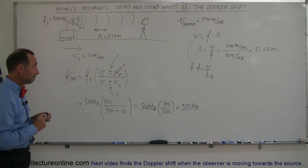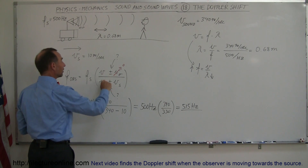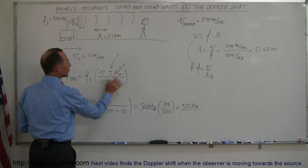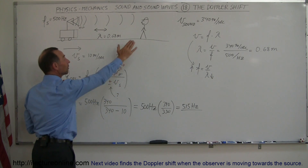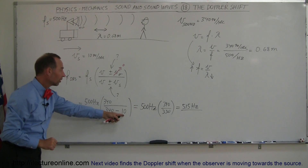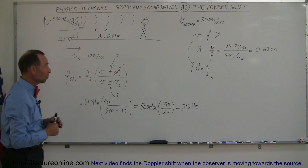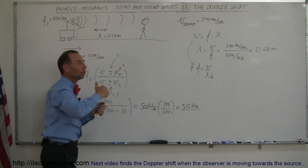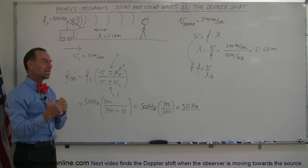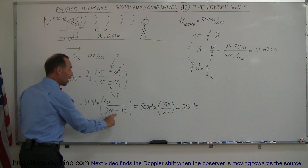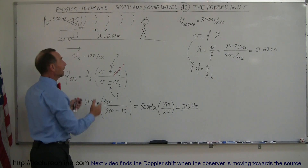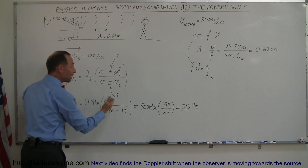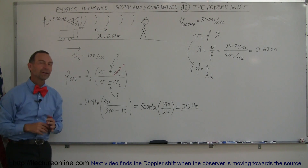To recap: write the equation with velocity of sound on top and bottom. Add plus or minus the velocity of the observer on top, and plus or minus the velocity of the source on the bottom. If the observer isn't moving, that term goes to zero. Put in the velocity of the source and ask: will the observer hear a higher or lower sound? Source moving toward observer means higher frequency — you need a smaller denominator, so use minus. Source moving away means lower frequency — you need a bigger denominator, so use plus. That's how you figure out these problems.